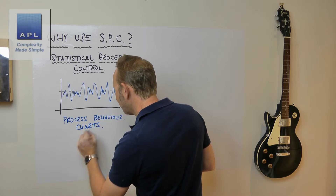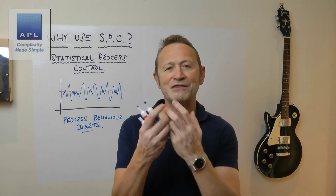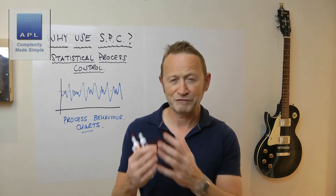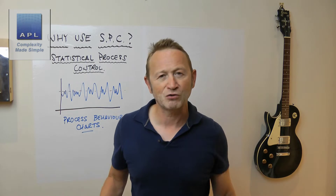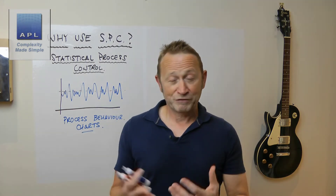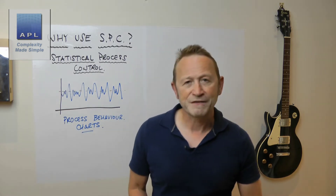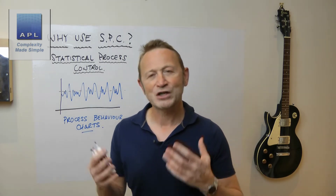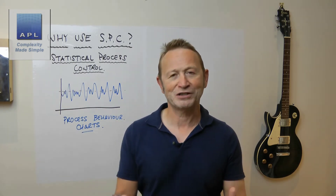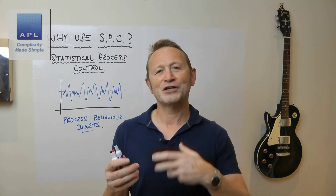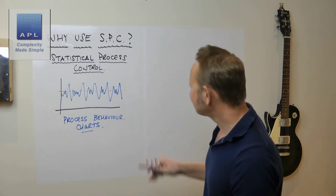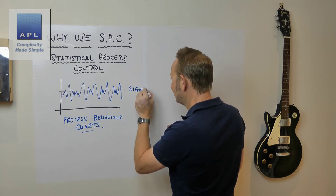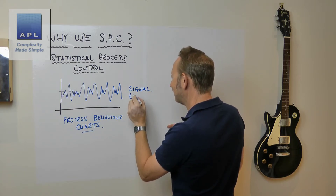Another way to think of it is that the process generates a natural process behavior, and some people call these process behavior charts because that's what they're trying to communicate — the natural process behavior — so that you can make better decisions. Don Wheeler's book 'Short Run SPC' is a great reference; he talks about process behavior charts in that textbook. Now, a random number generator has certain features you can use to understand it. One of those features is the signal, which is the average.